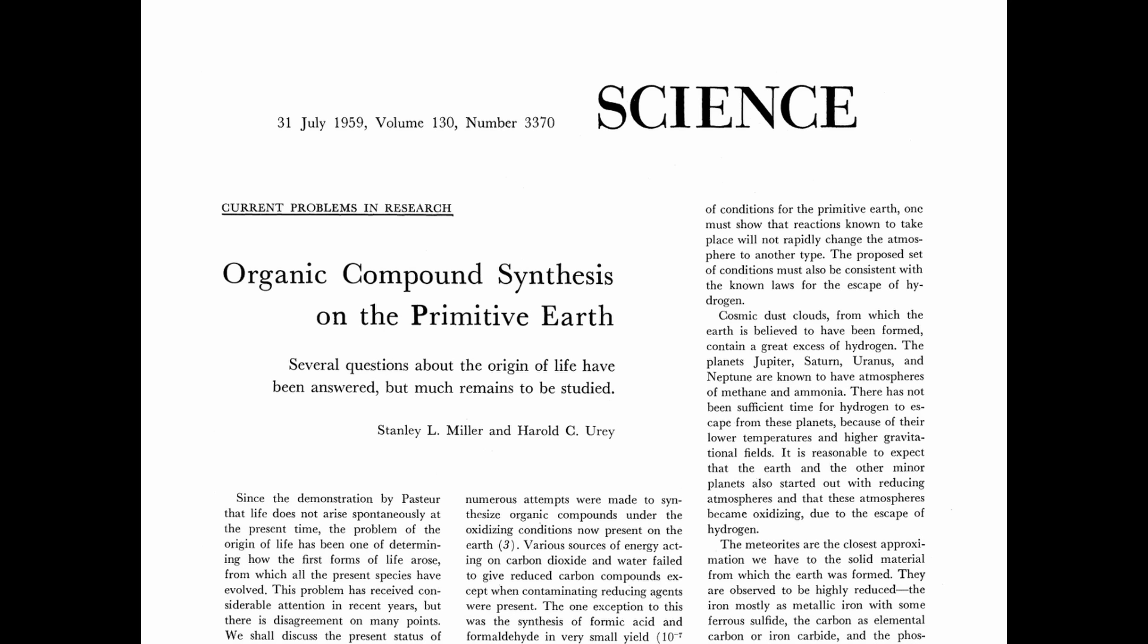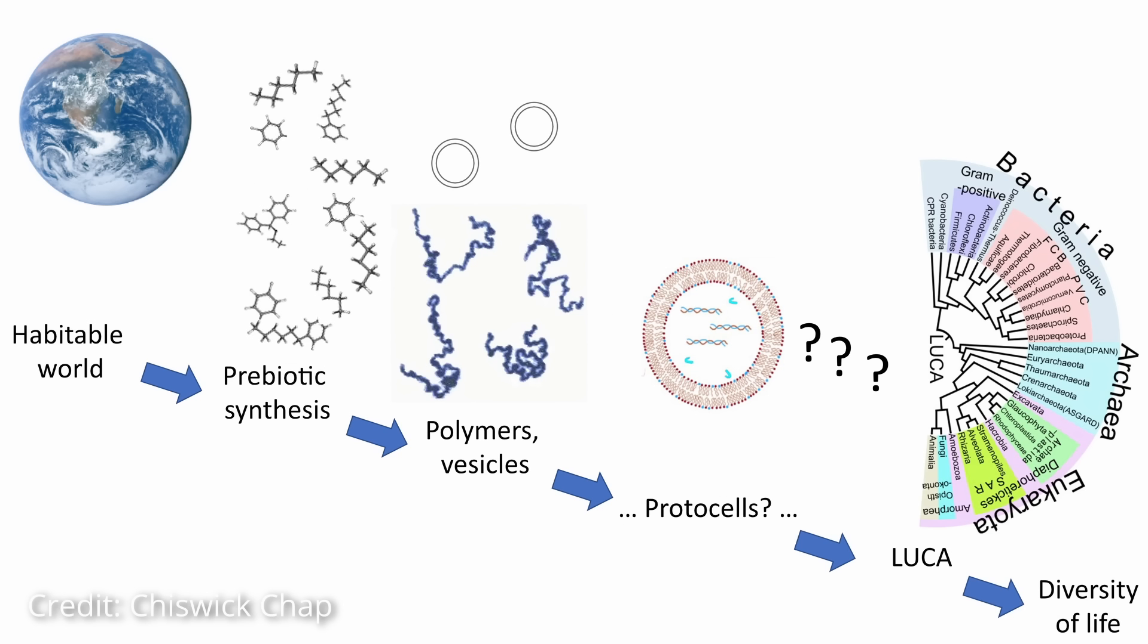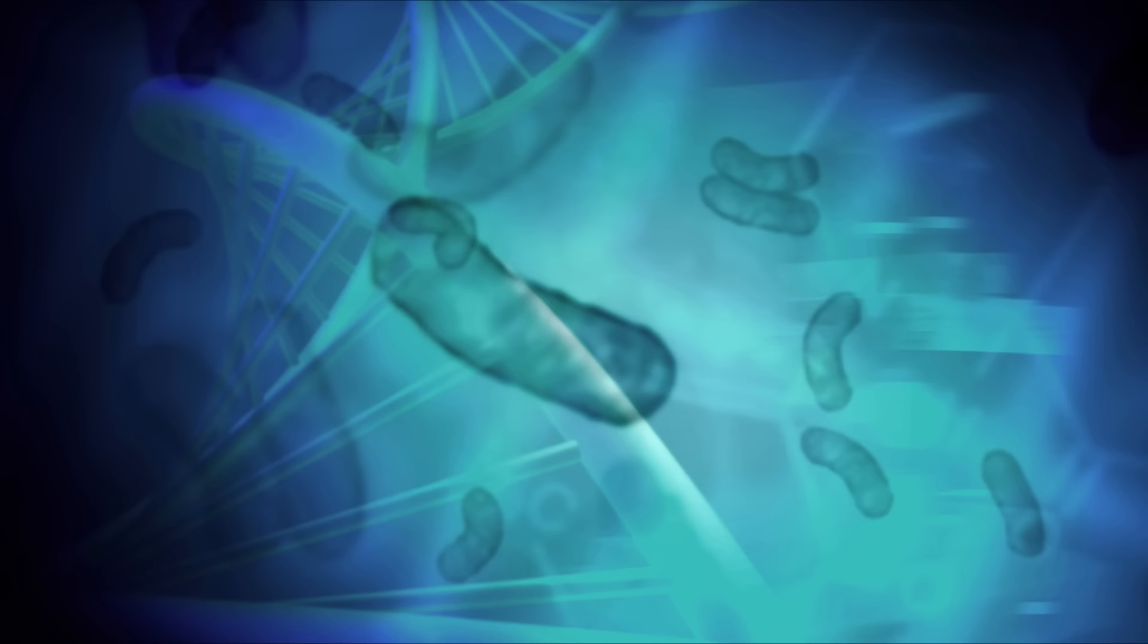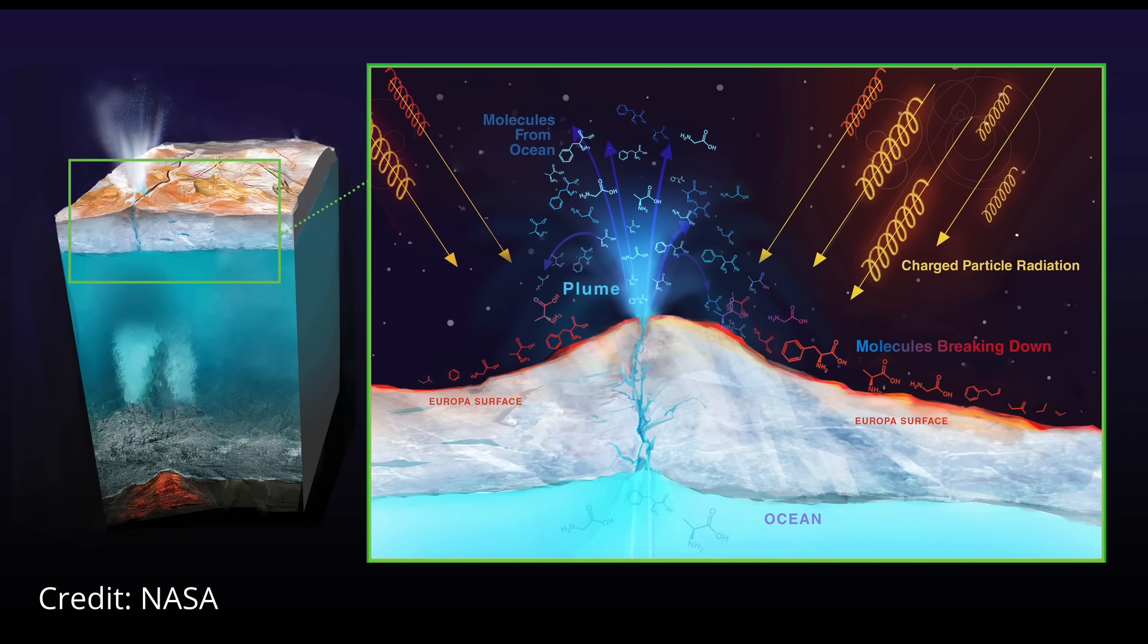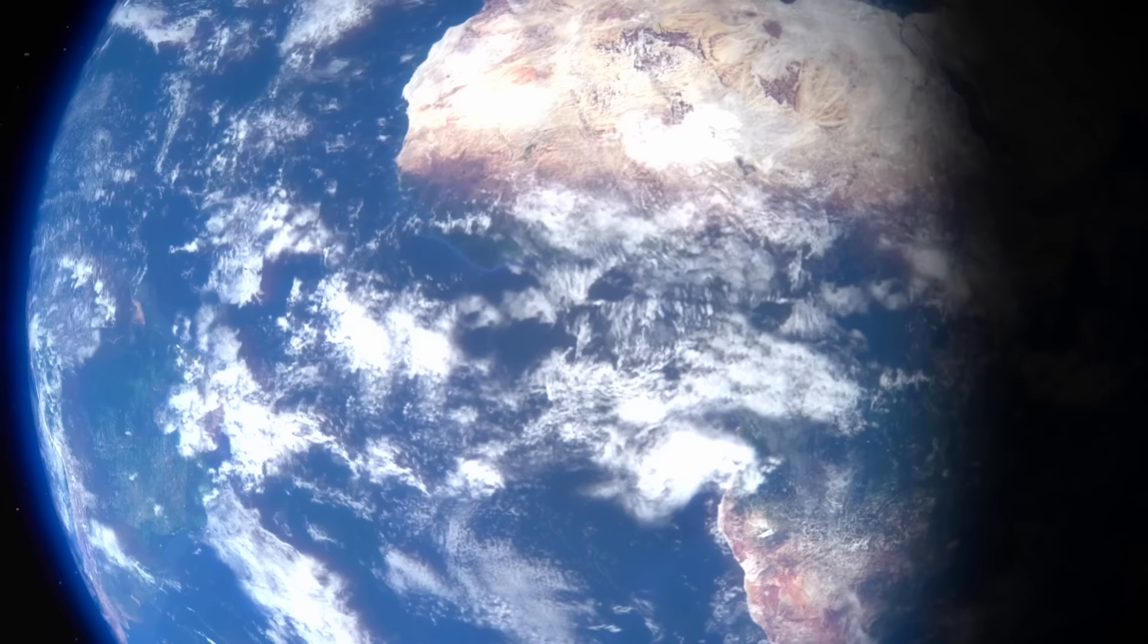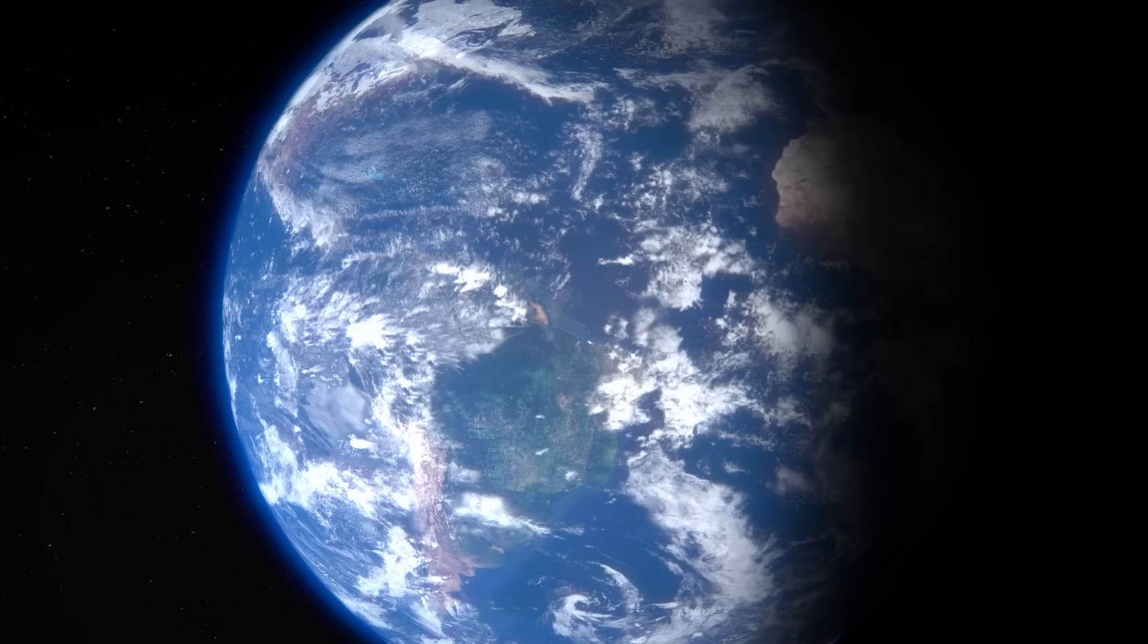Stanley Miller's experiments had a profound impact on the field of abiogenesis and the study of the origin of life. It prompted further research into prebiotic chemistry, the conditions for the emergence of life, and the search for life beyond Earth. While the experiment did not directly prove how life actually began on Earth, it provided strong support for the idea that the basic ingredients of life could have originated through natural processes.